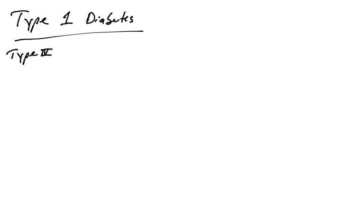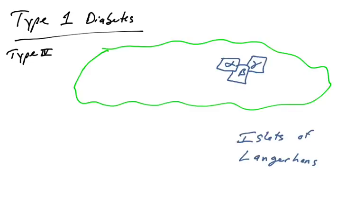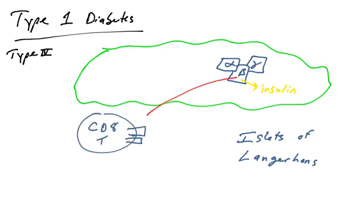Let's talk about type 1 diabetes, another type 4 hypersensitivity. Type 1 diabetes involves the death of cells in the pancreas, specifically cells found in the islets of Langerhans. In these islets — little groupings of cells in the pancreas — you find alpha cells, beta cells, and gamma cells. The beta cells secrete insulin in response to high glucose levels in the blood. In individuals who suffer from type 1 diabetes, typically during childhood, there is a slow erosion of the beta cells. It is believed that CD8 T-cells are recognizing some peptide presented on the surface of beta cells and destroying these cells as if they were infected.